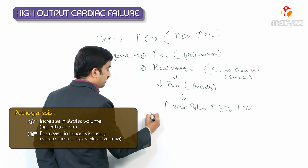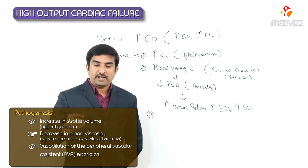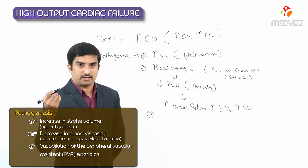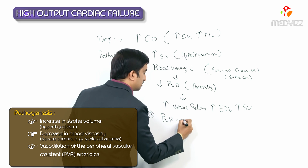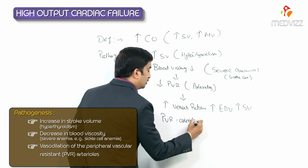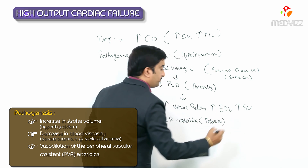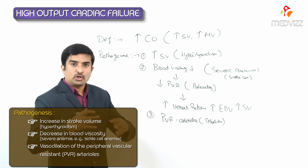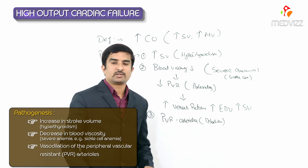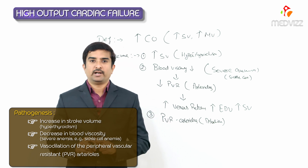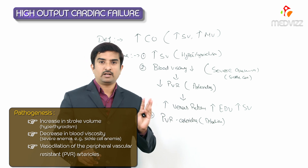Another important mechanism is vasodilation of the peripheral vascular resistant arterioles. When PVR arterioles undergo dilation, there will be vasodilation of these resistant arterioles. Vasodilation increases venous return to the heart.